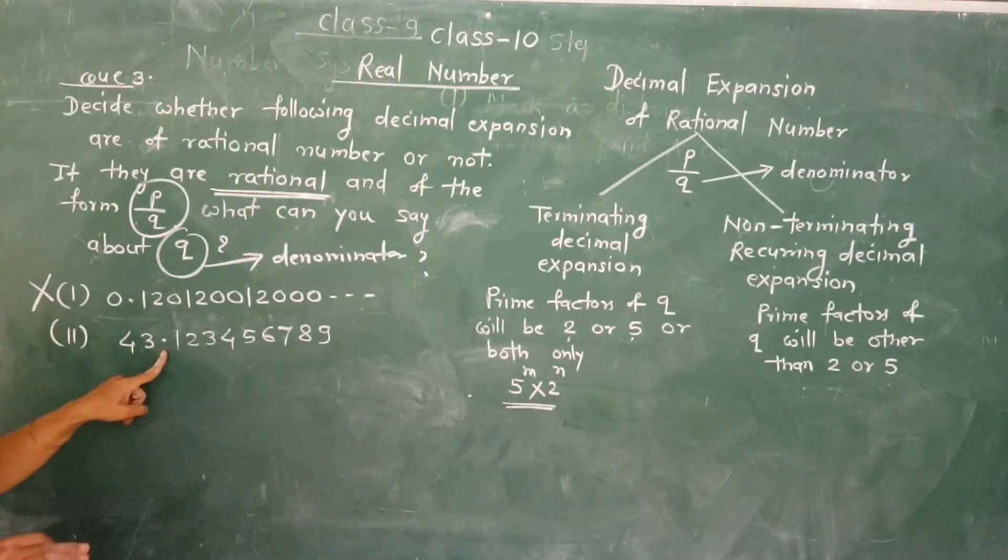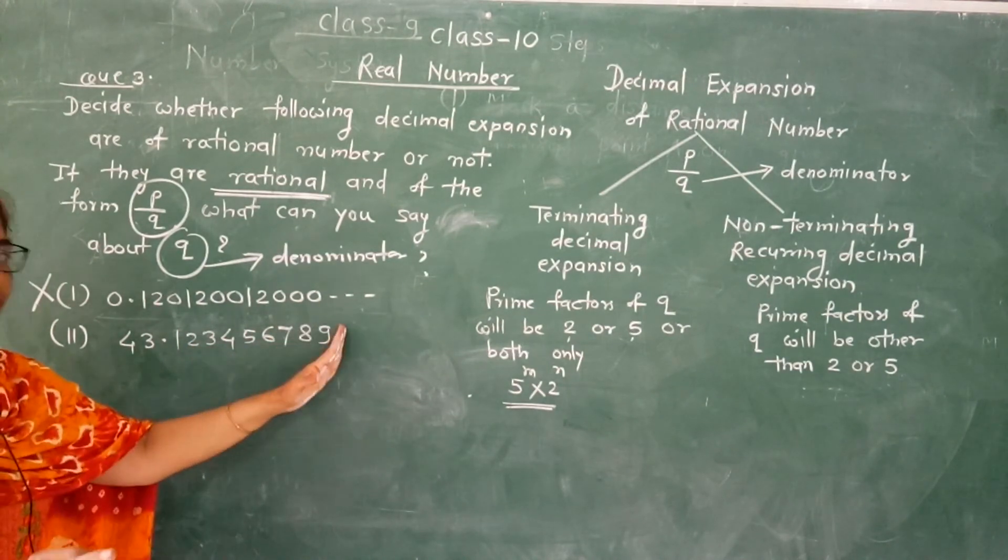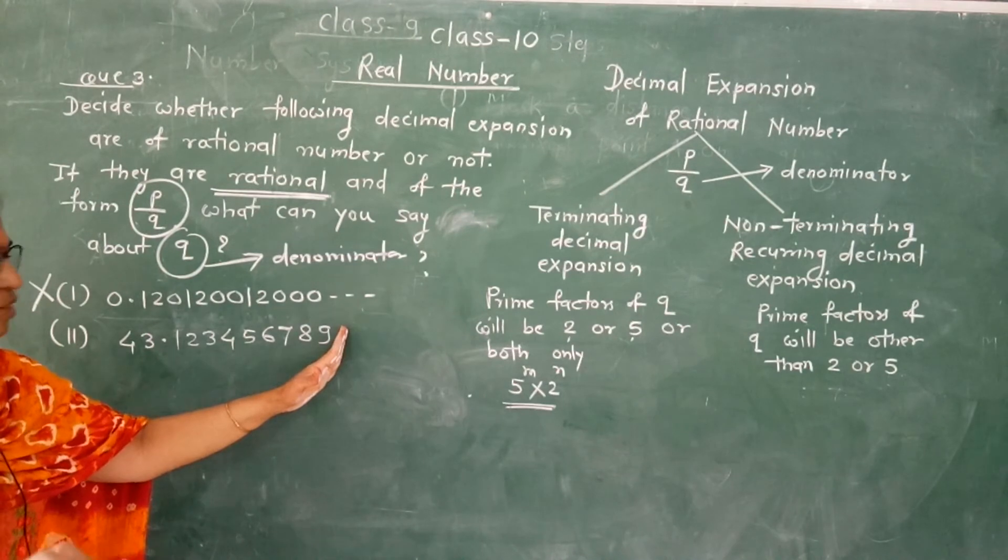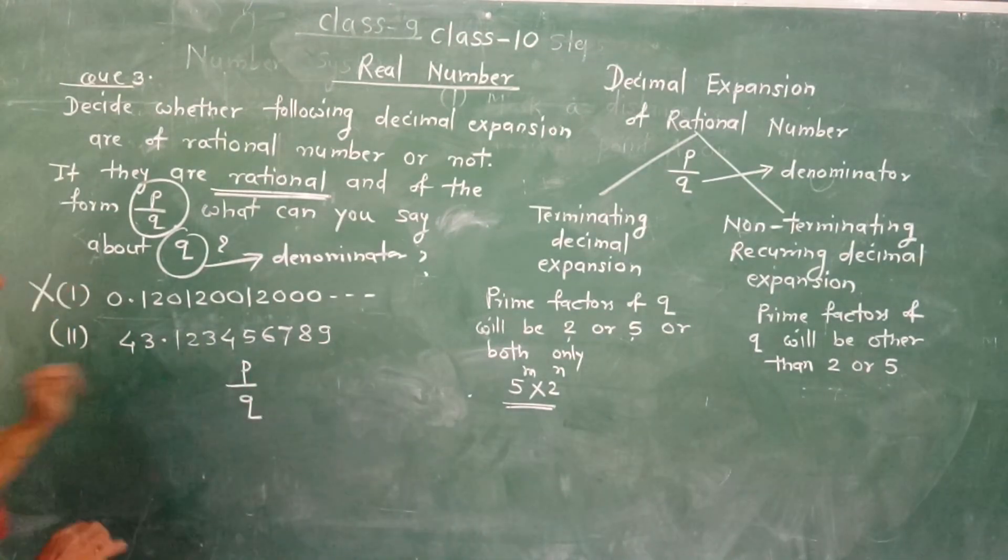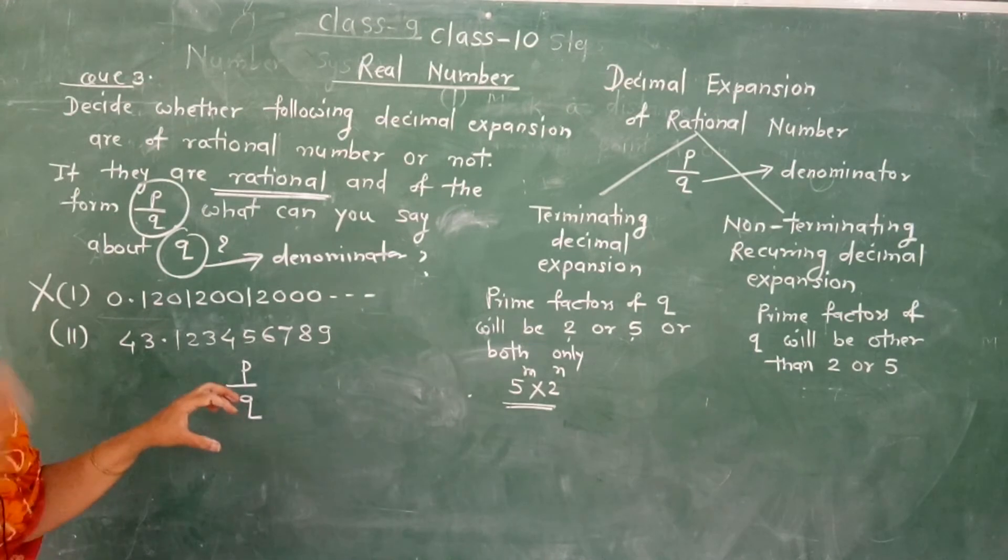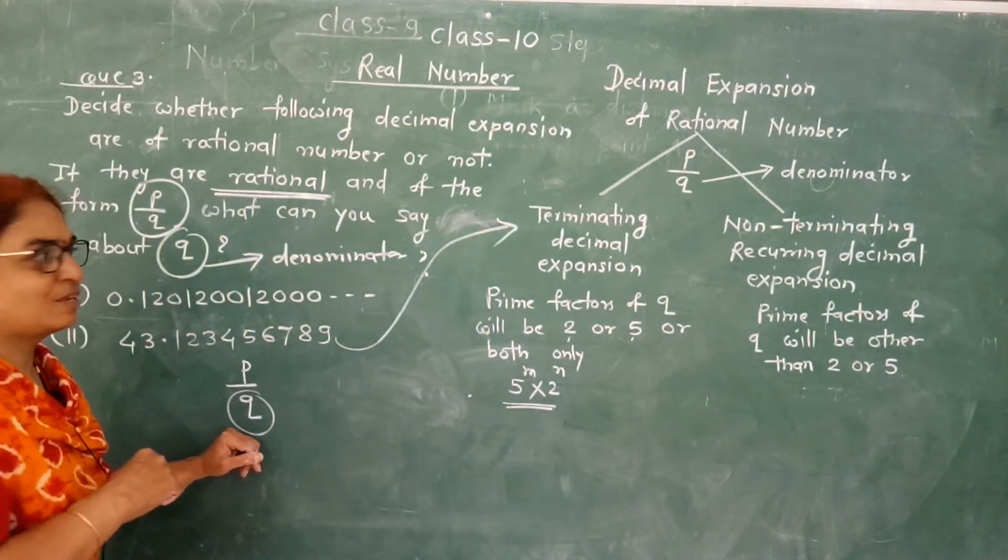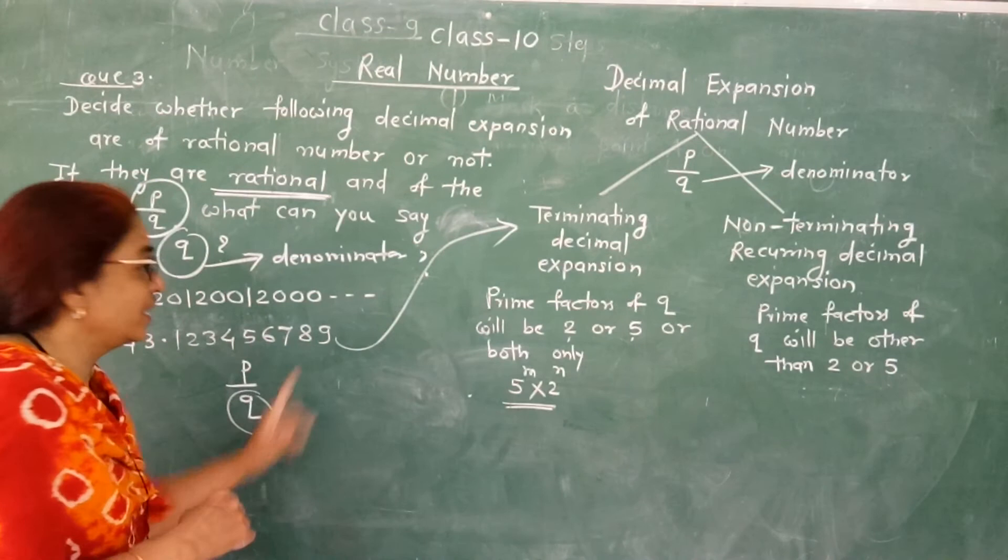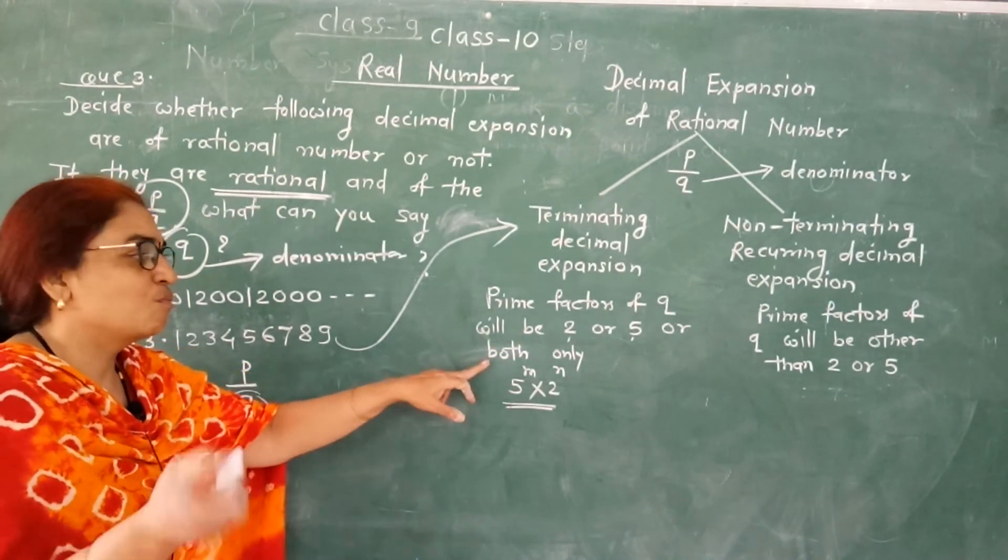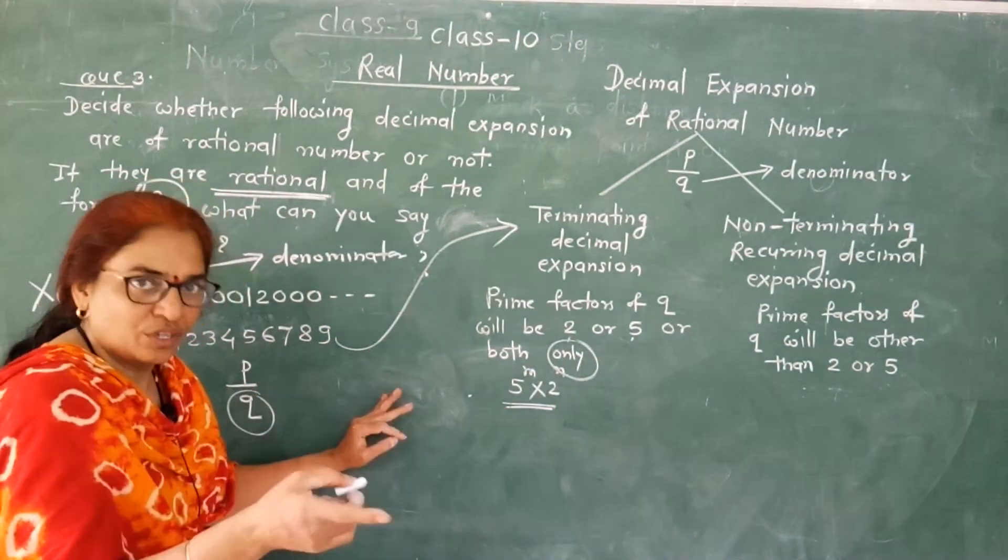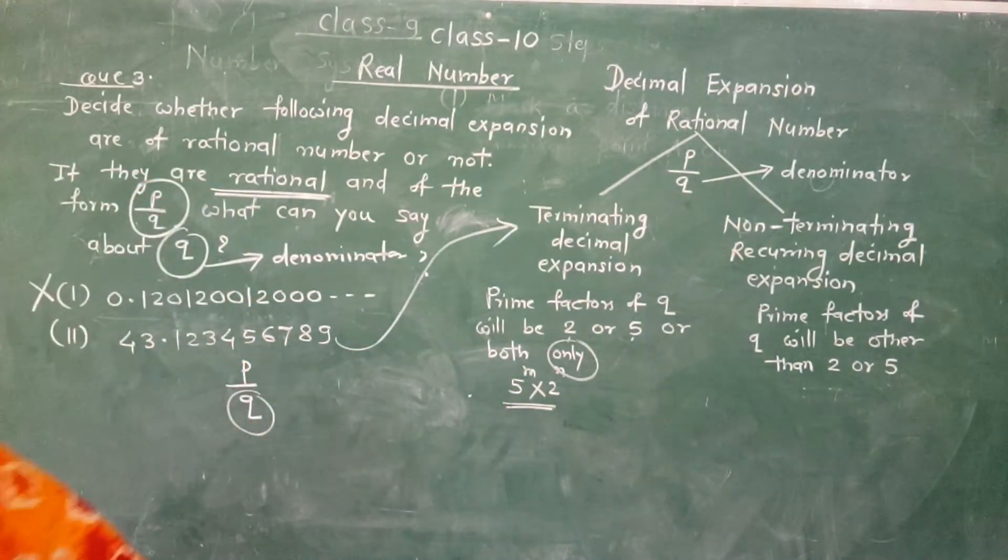Now second: 43.123456789, stop here. This decimal expansion is terminating. If it is terminating, the prime factors of the denominator will be 2 or 5 or both only.